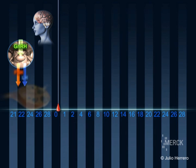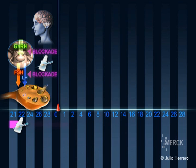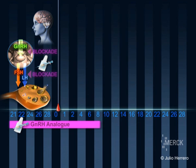A GnRH analogue agonist is administered nasally or subcutaneously from day 21 of the menstrual cycle. Following an initial flare effect of LH, pituitary release of LH is suppressed, thus preventing premature ovulation of the follicles during stimulation.